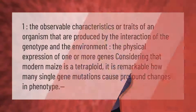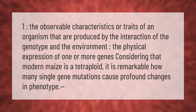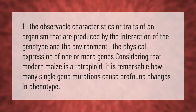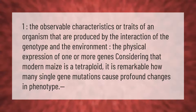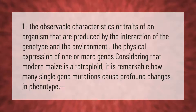One: the observable characteristics or traits of an organism that are produced by the interaction of the genotype and the environment — the physical expression of one or more genes. Considering that modern maize is a tetraploid, it is remarkable how many single gene mutations cause profound changes in phenotype.